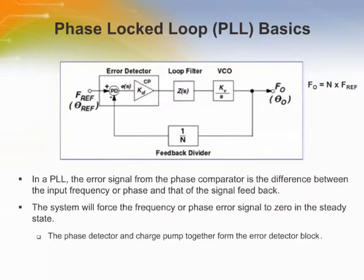A Phase Lock Loop is a feedback system combining a Voltage Controlled Oscillator and a Phase Comparator so connected that the oscillator frequency or phase accurately tracks that of an applied frequency or phase modulated signal. Phase Locked Loops can be used, for example, to generate a stable output frequency signal from a fixed low frequency signal.